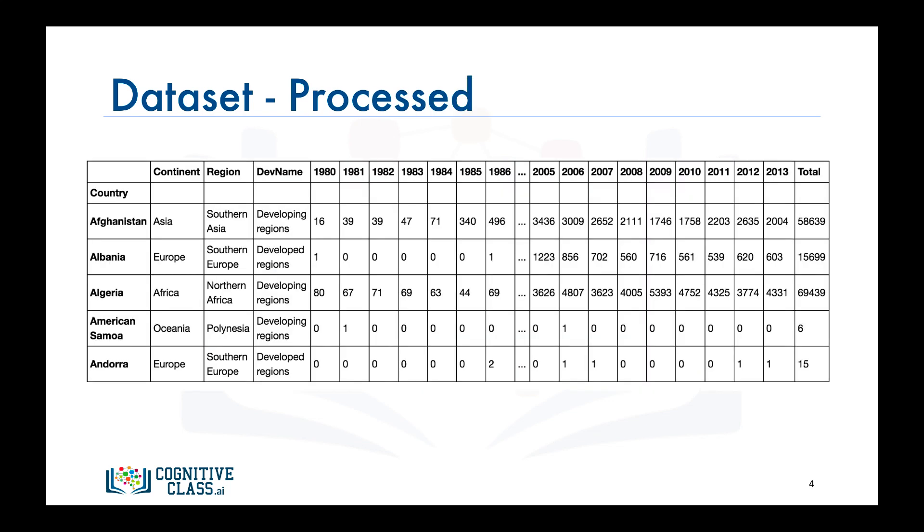Now let's process the dataframe so that the country name becomes the index of each row. This should make retrieving rows pertaining to specific countries a lot easier.